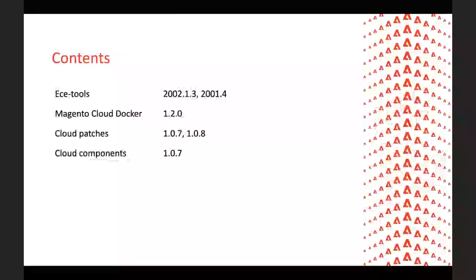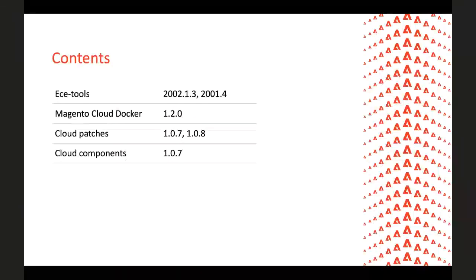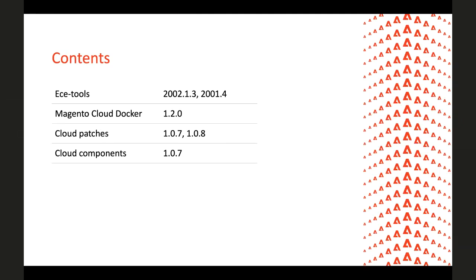We have a few different tools which we develop and support as a Cloud team. We have ece-tools, which is the main package for deploying and installing Magento on Cloud. We have Magento Cloud Docker, which is our local sandbox that emulates the real Cloud environment. We also have Magento Cloud Patches and Cloud Components, which extend Magento Commerce core functionality on Cloud. Let's take a look at what exactly we included in our releases.